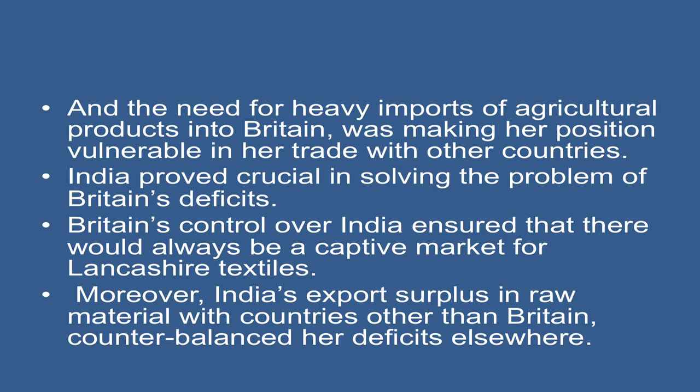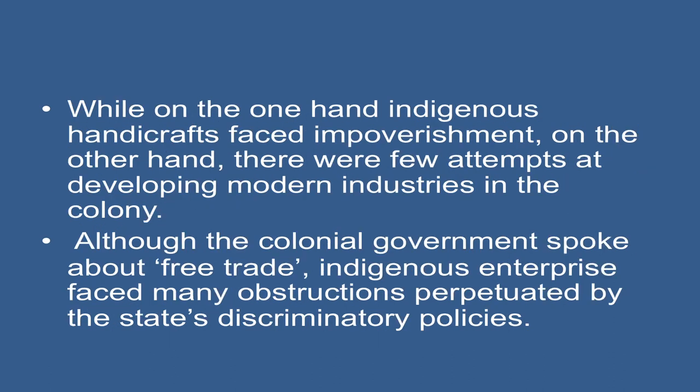The need for heavy imports of agricultural production into Britain was making her position vulnerable in trade with other countries. India proved crucial in solving the problem of British deficits. Britain's control over India ensured that there would always be a captive market for Lancashire textiles. Moreover, India's export surplus in raw material with countries other than Britain counterbalanced her deficits elsewhere. While on one hand indigenous handicrafts faced impoverishment, on the other hand there were few attempts at developing modern industries in the colonies.